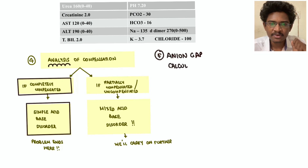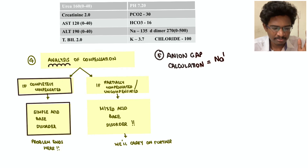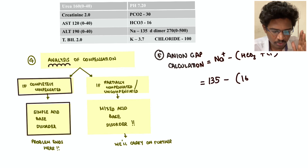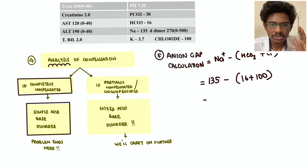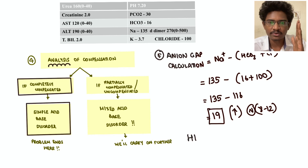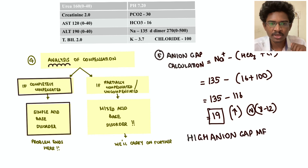Step five: anion gap calculation — sodium minus (bicarb + chloride). Sodium 135 minus (bicarb 16 + chloride 100) = 19. Normal anion gap is 8 to 12; 19 is more than 12, so high anion gap metabolic acidosis (HAGMA) is confirmed.